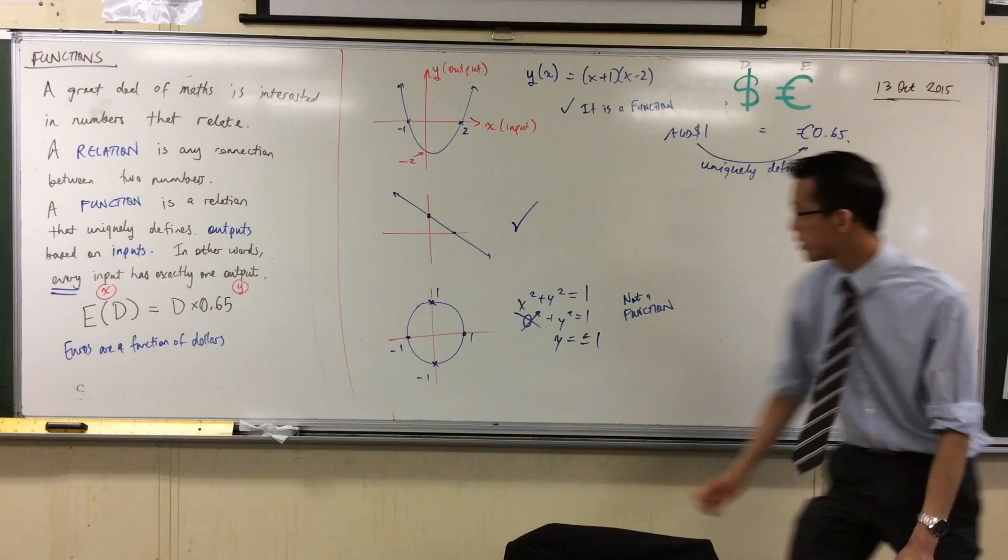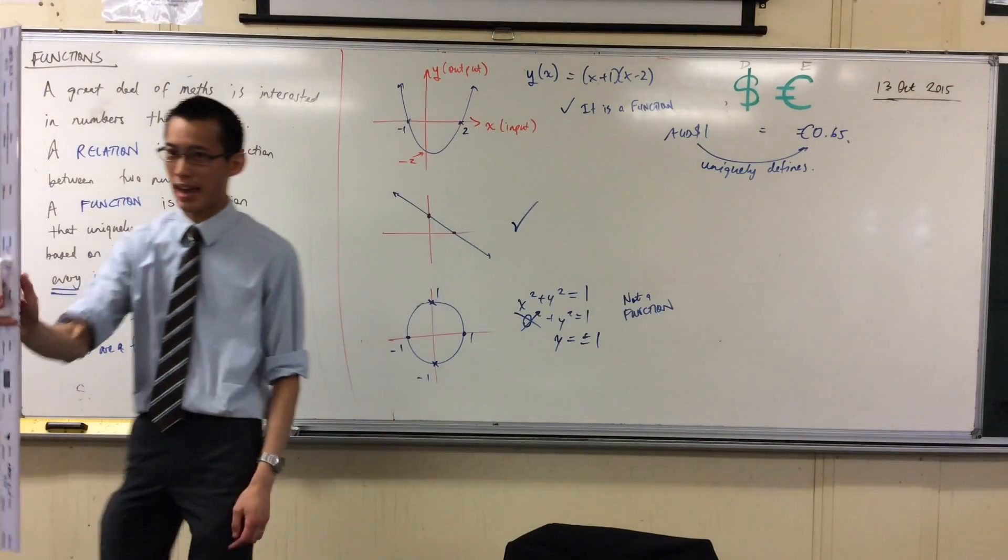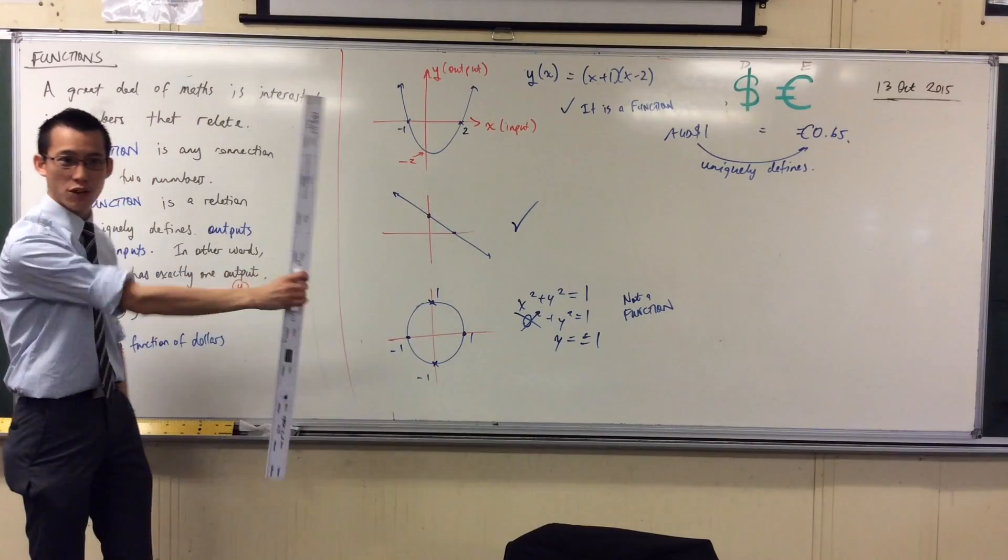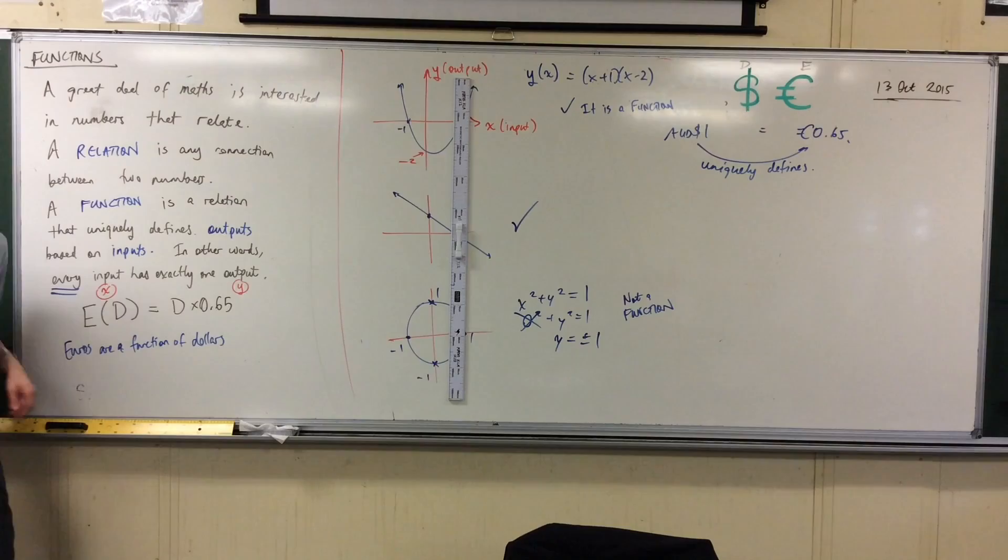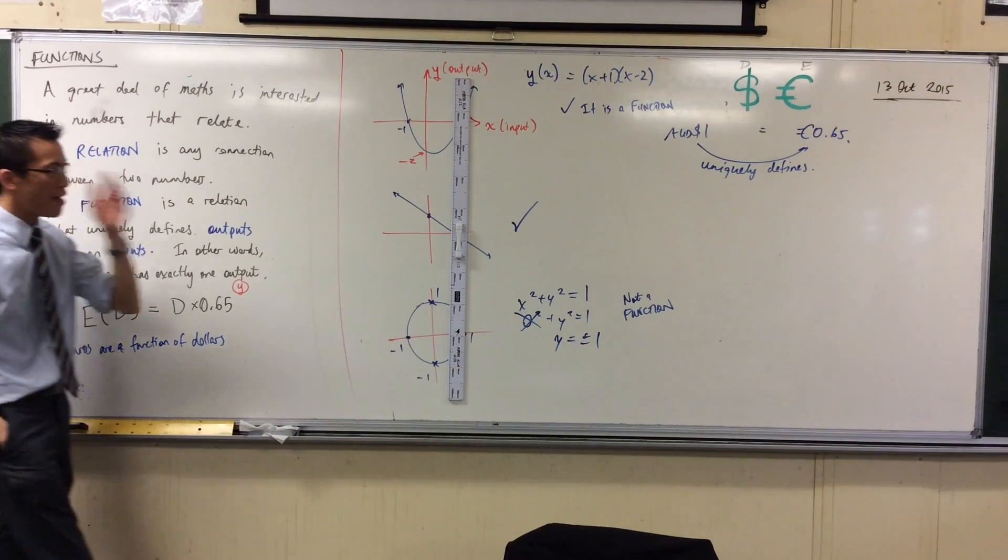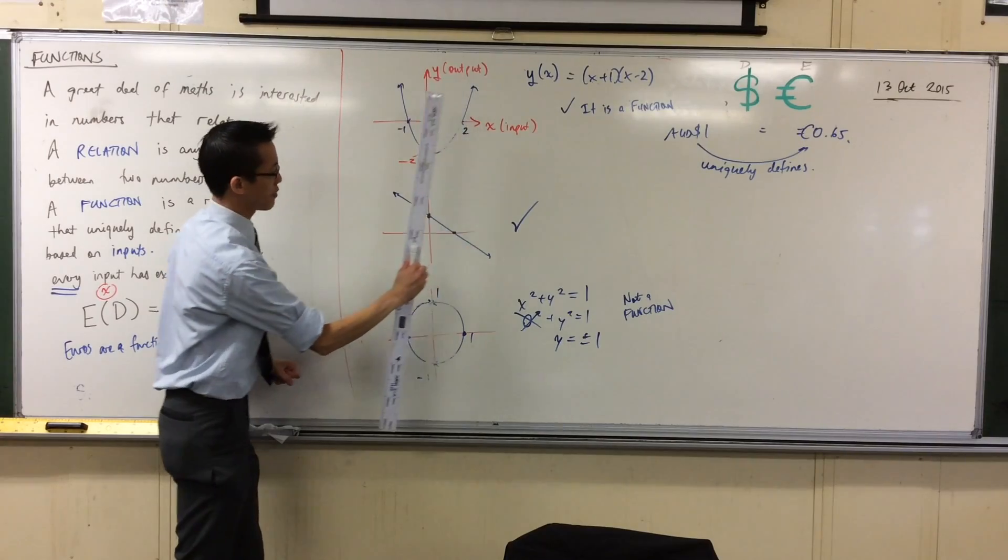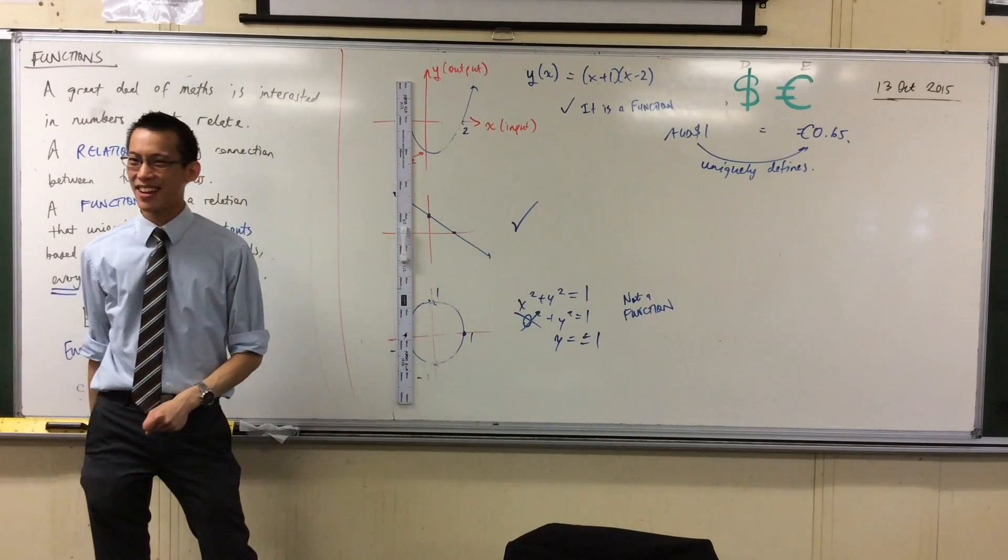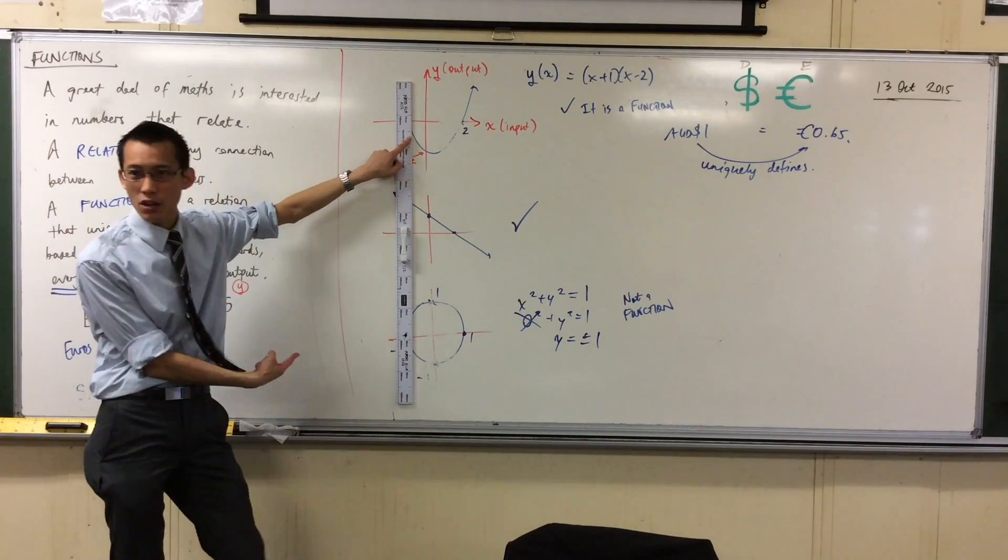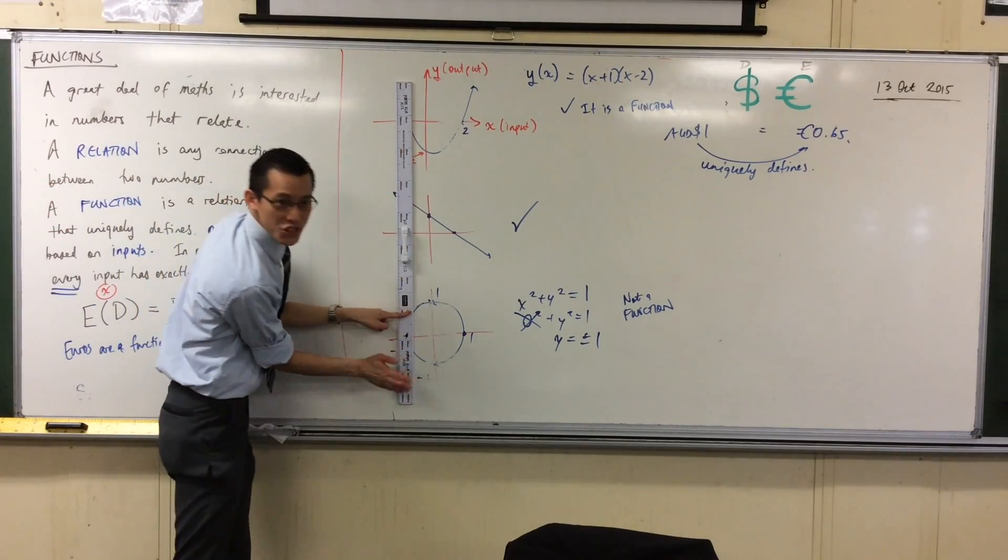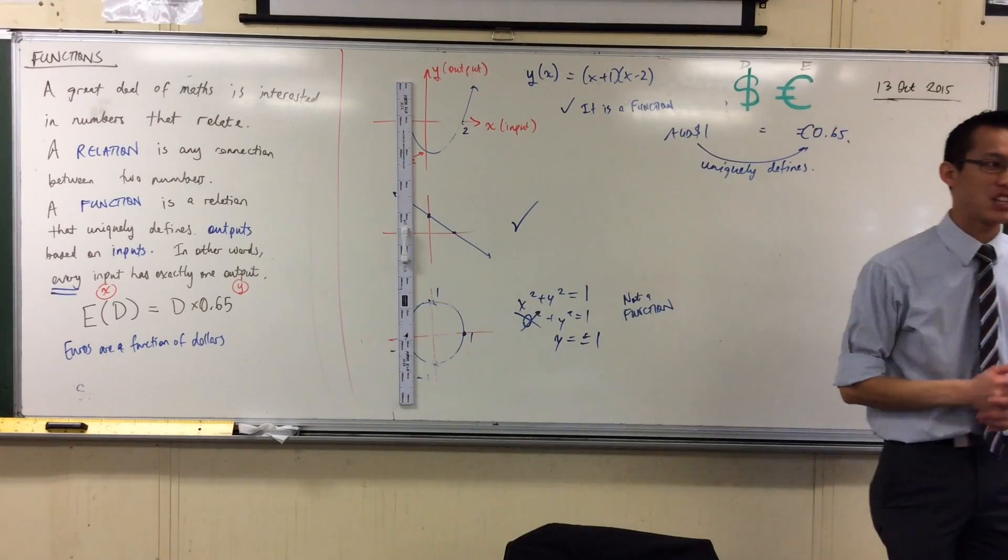If you take your graph and a vertical line, and you place your vertical line across the graph, like say there. If what you have is a function, then wherever you move your vertical line, here or here, or I'm destroying my graphs, or here, then you'll get one output, one point of intersection. Have a look at my circle. What happened? I've got two. It's not a function. And we call that the vertical line test. We're going to continue looking at it on Thursday.